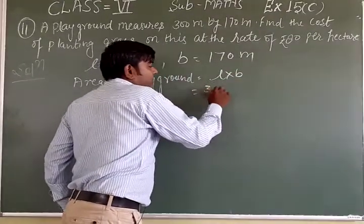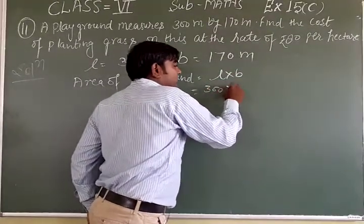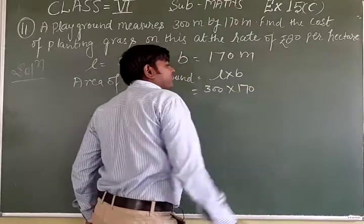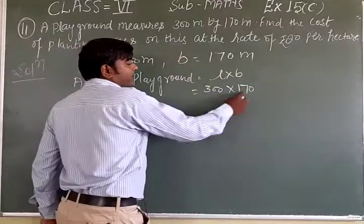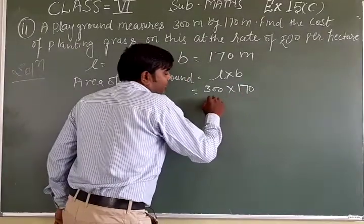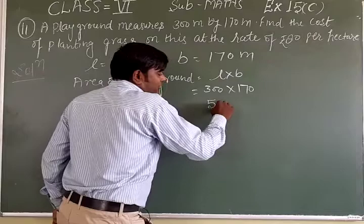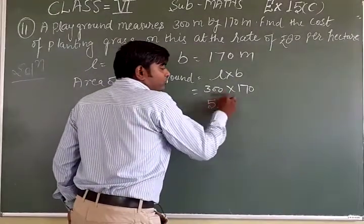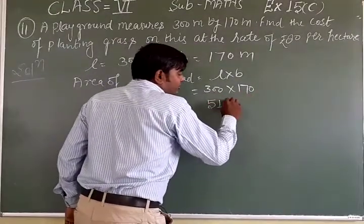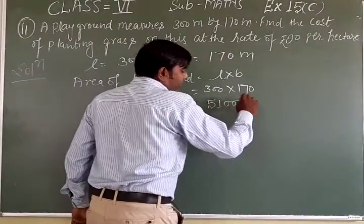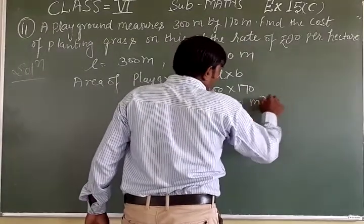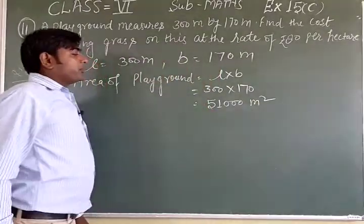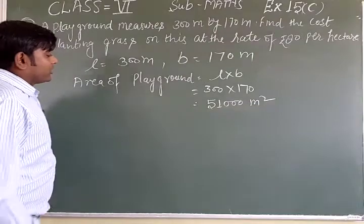L is 300 into B is 170. Multiplying these together gives us 51,000 meters square.